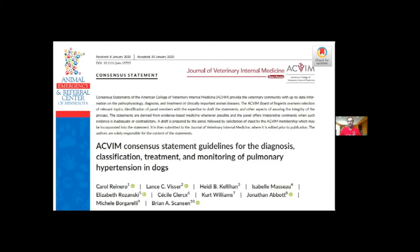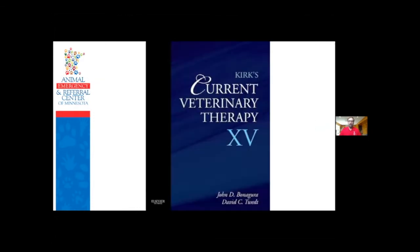The ACVM consensus statements are all free to download - just search for ACVM consensus statements and it'll give you the list of all of them. I also pulled information from the most recent version of CVT, which I really like for being a nice consensus overview of different disease processes. This one's getting a few years old and there's been some newer information since, but it's still a good reference for pulmonary hypertension.